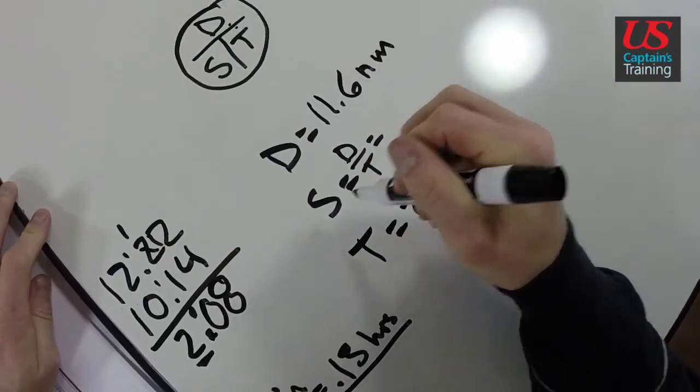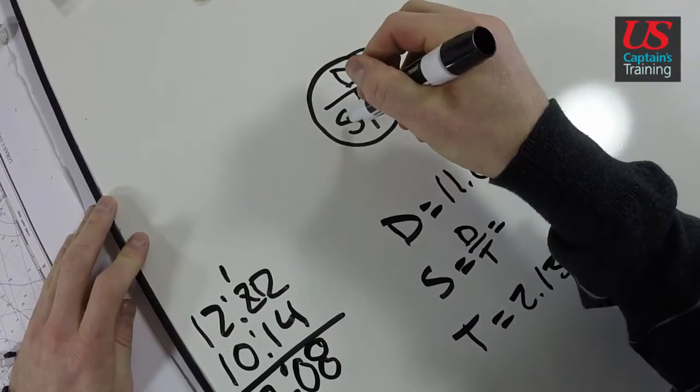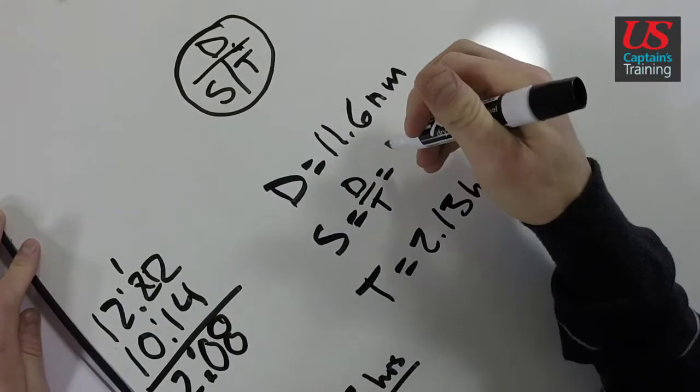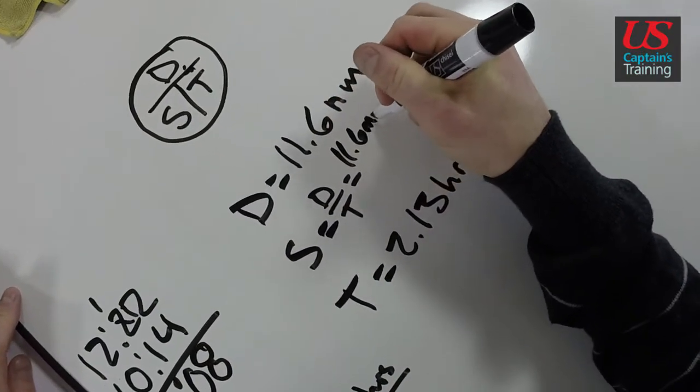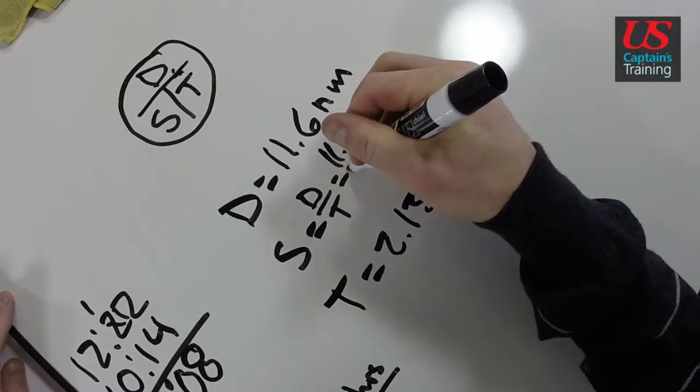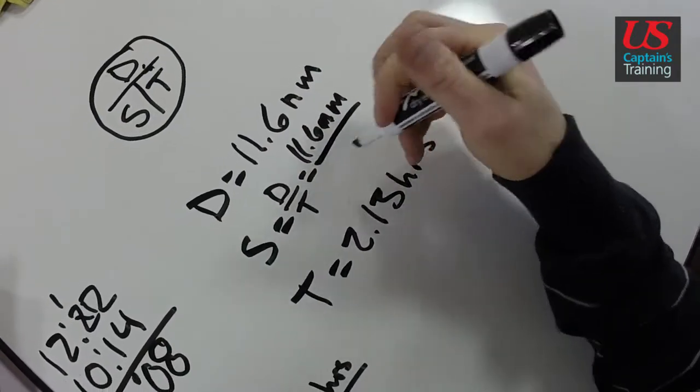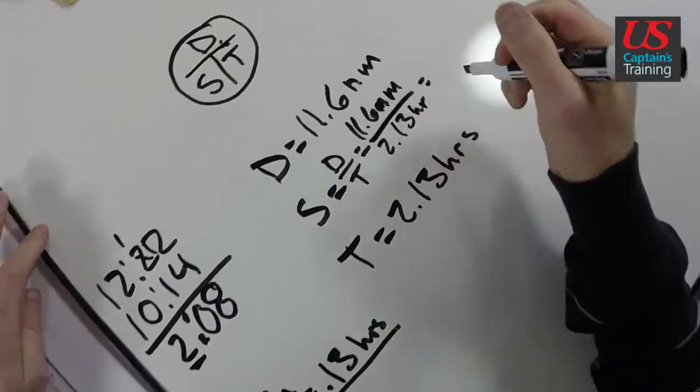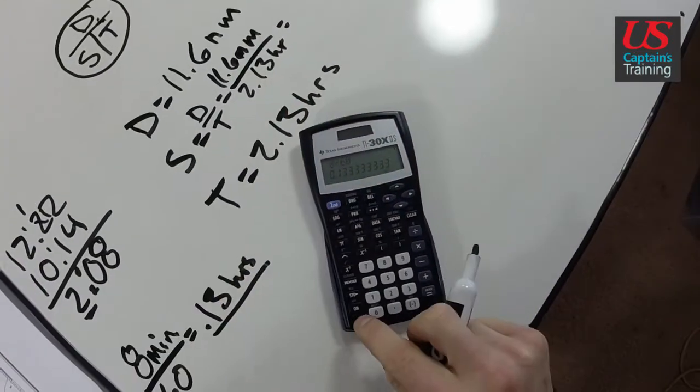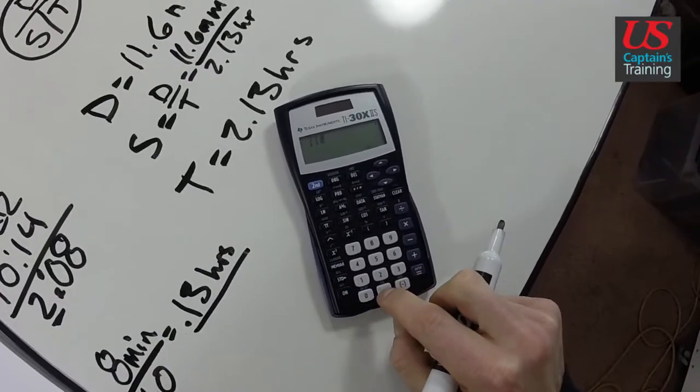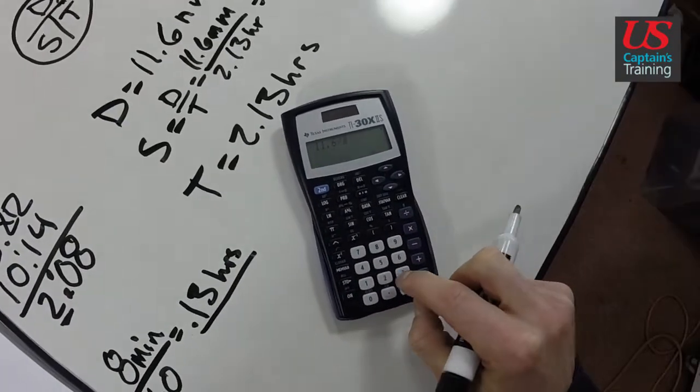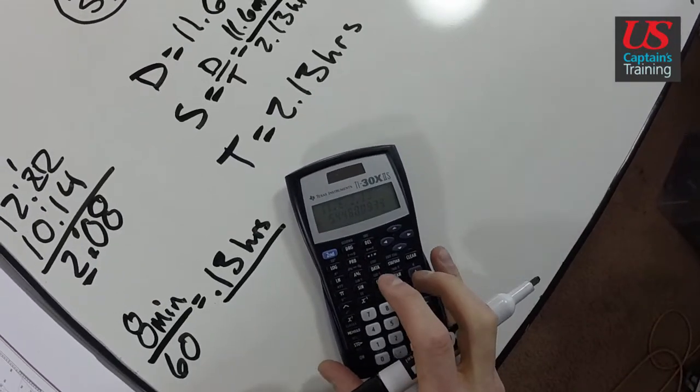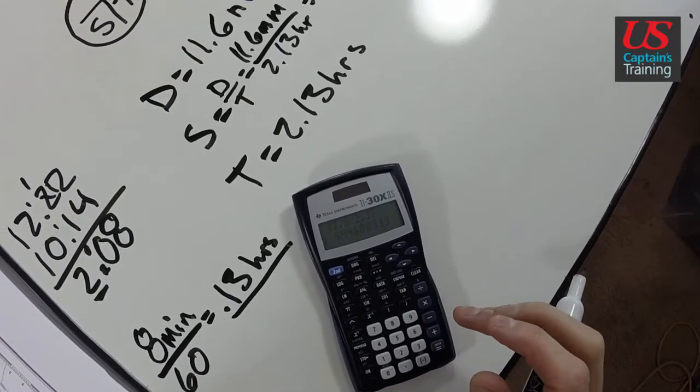Now we have everything we need to find speed. Because speed is equal to distance divided by time. So distance 11.6 nautical miles divided by 2.13 hours, 2.13 hours equals, get the calculator, clear.